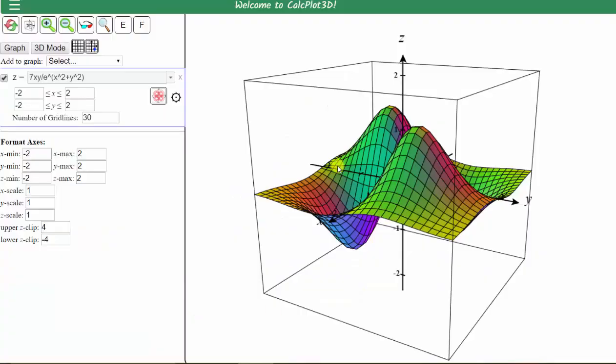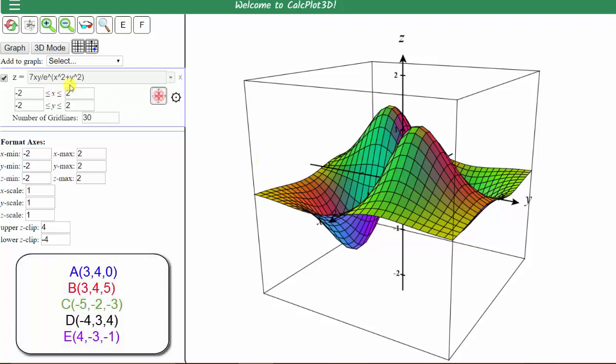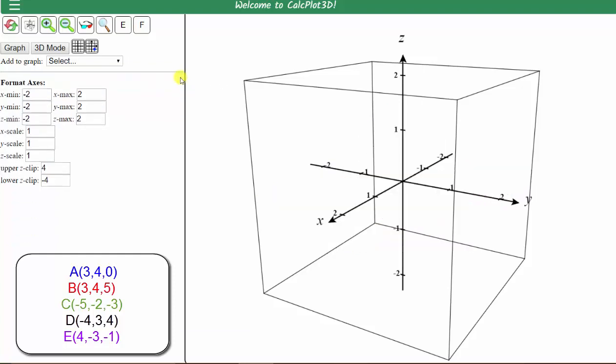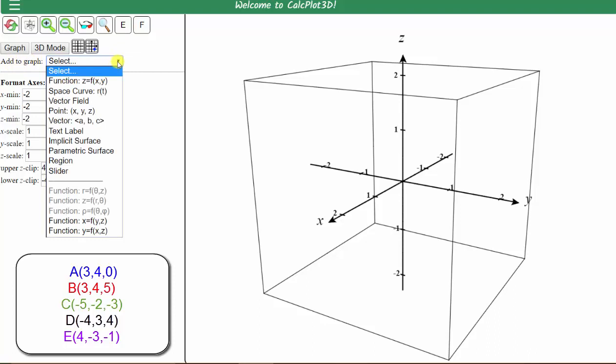When the app is open, this is always the default surface that is plotted. We need to clear this plot, and because we're plotting points, let's go ahead and clear this window as well by checking the x to the right of the equation. Now to the right of Add to Graph, we click the arrow, which opens this drop-down menu. We select Point.